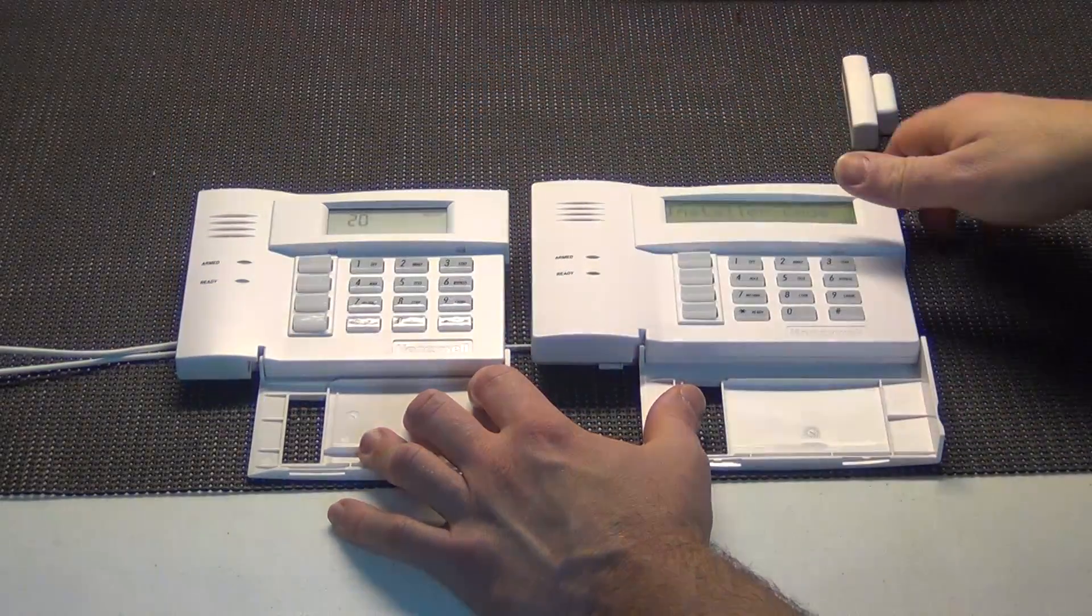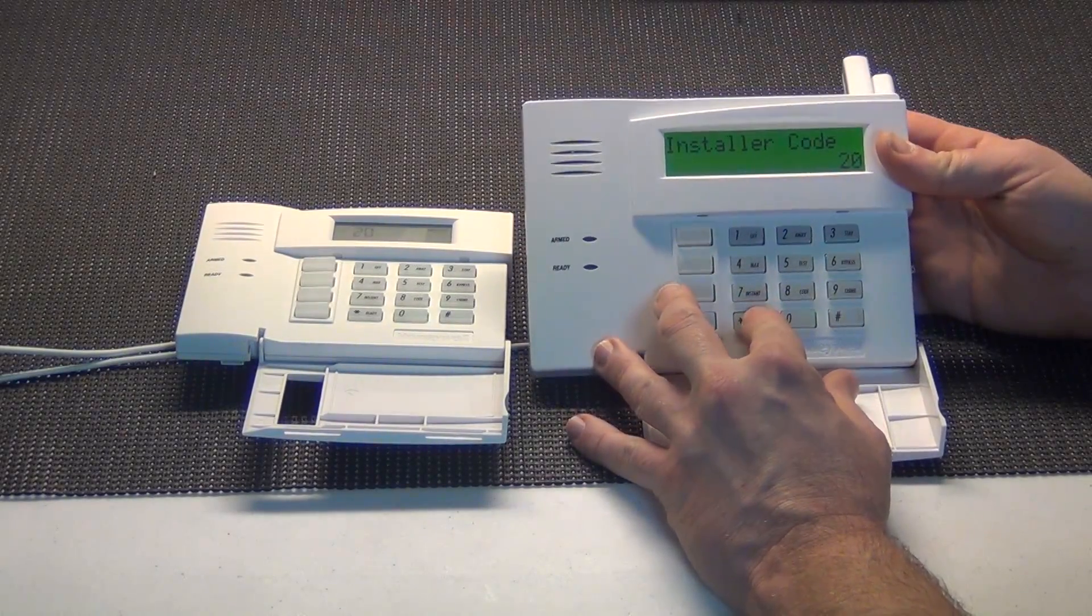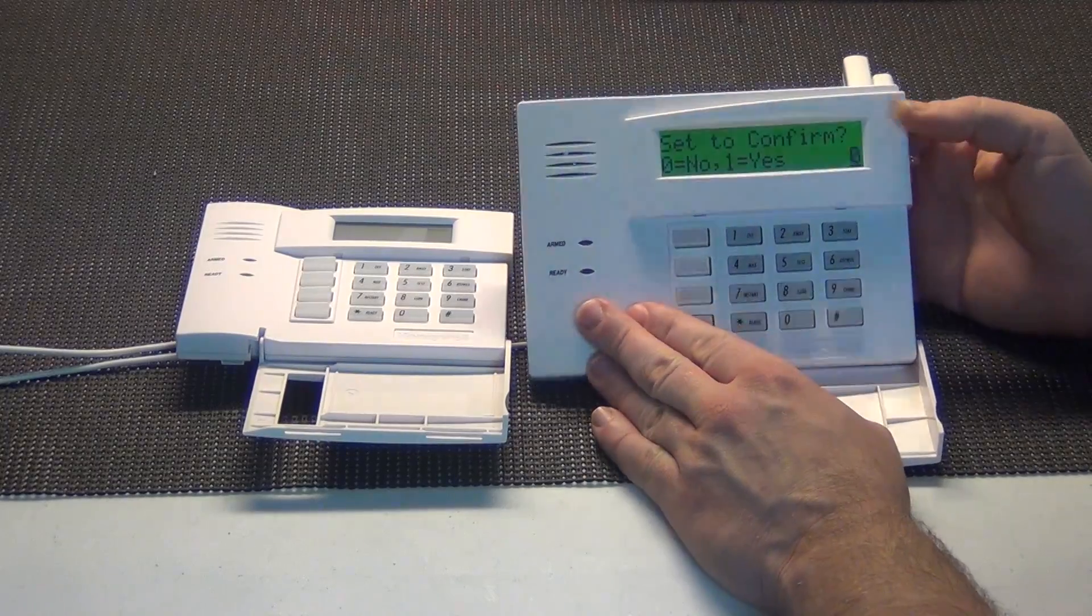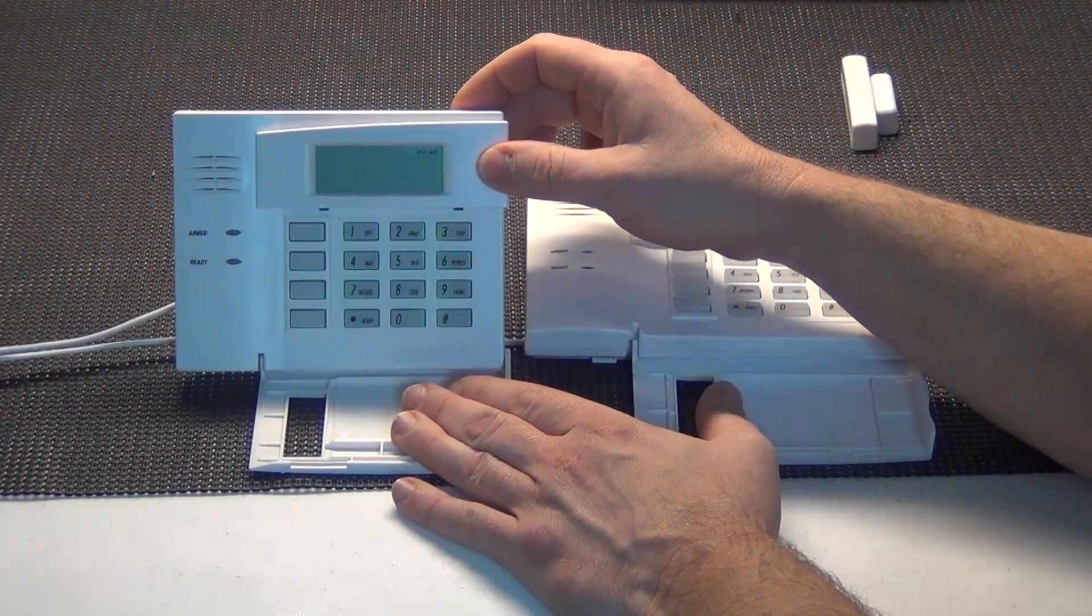Let's go ahead and go to a zone section. Let's go to the section for zone programming. On the 6160, you will see set to confirm zero for no one for yes. On the 6150: nothing.